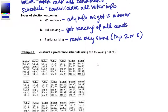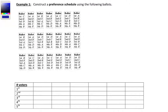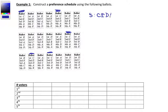Let's talk about our first example. We're going to construct a preference schedule — this table that holds all the information from the following 21 ballots. Each column corresponds to a ranking that shows up in the ballots, and the number at the top tells how many voters voted that way. The first ranking is C, E, D, A, B — and counting through the ballots, we find five voters ranked them in that order.